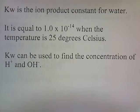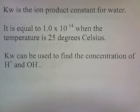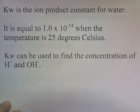K_w is the ion product constant for water. It equals 1 × 10⁻¹⁴ at 25°C. K_w can be used to find the concentration of H⁺ and OH⁻.